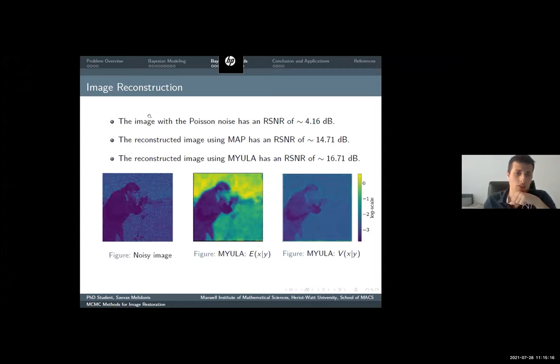Here's an example. We have here the image with the Poisson noise. It has an RSNR of four decibel. MAP had an RSNR of 14. The reconstructed image using MYULA has an RSNR of 16.